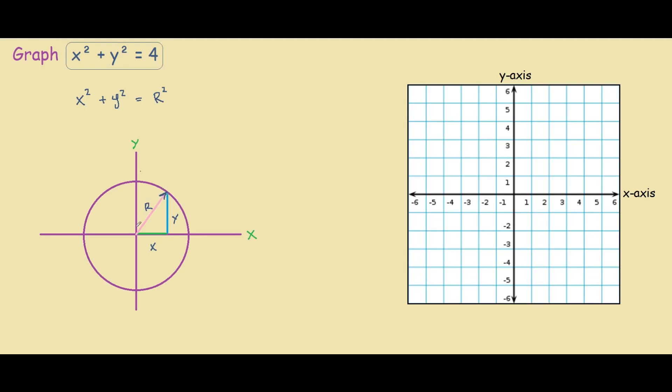r here is the radius of the circle, so this length over here is also r, same as this length over here.